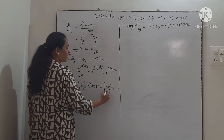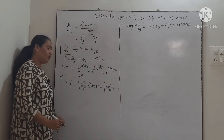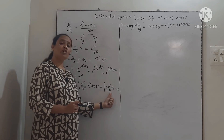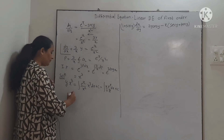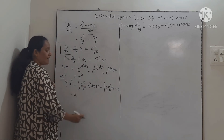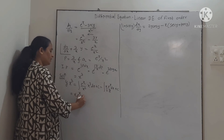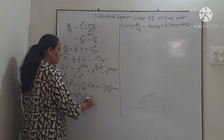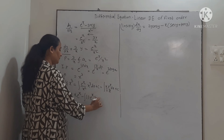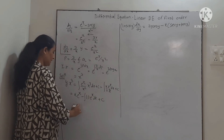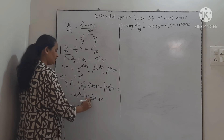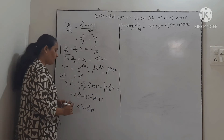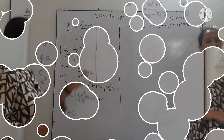Now we have two functions: one algebraic (x) and one exponential (e^x). Arranging by the LIATE rule, algebraic is the first function and exponential is the second. Applying integration by parts: ∫x · e^x dx = x · e^x − ∫1 · e^x dx = x · e^x − e^x. Therefore the solution is y · x³ = x · e^x − e^x + c.